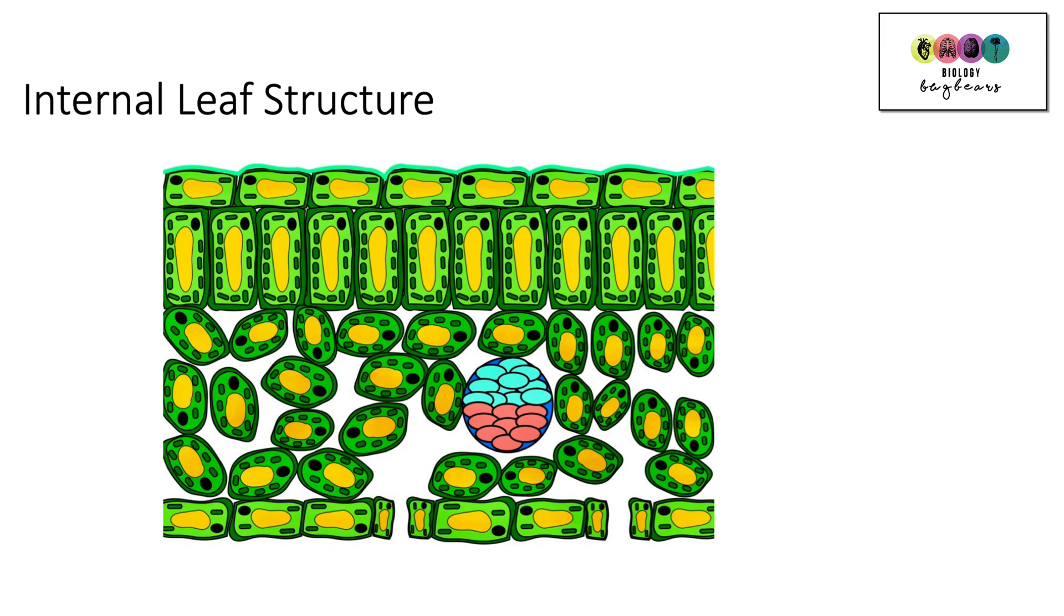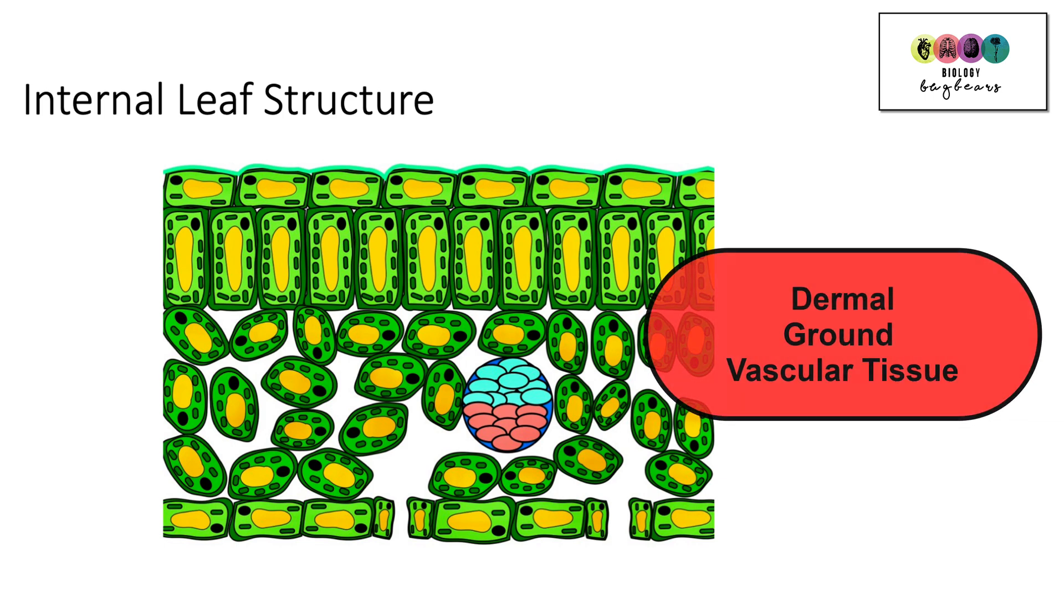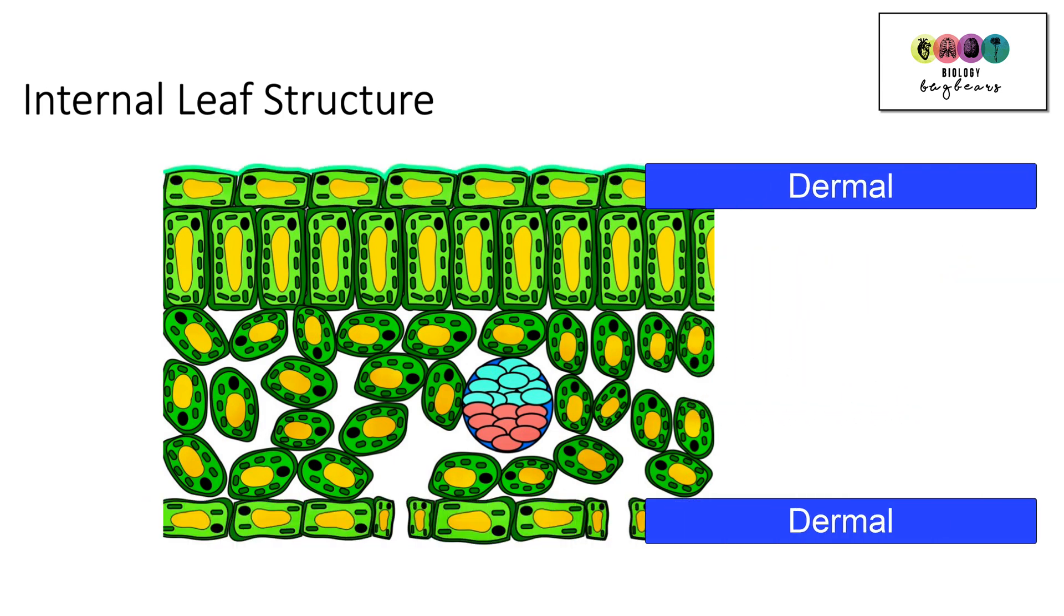So next is the internal structure of the leaf. Hasn't been asked very often, but could appear with a question on photosynthesis. So use your textbook to draw just a very basic sketch of it. Remember, when you're dealing with plants, always start with the tissues. Dermal, ground, vascular. So dermal tissue will cover the outer regions of the plant. So it's going to be on the top and the bottom of this diagram.